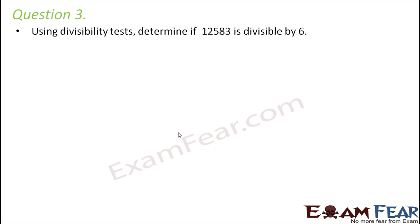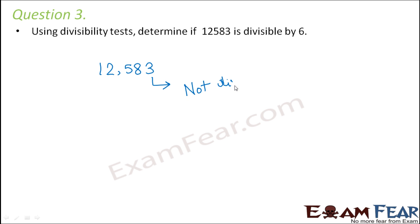Question number 3: Using divisibility tests, determine if 12583 is divisible by 6 or not. The rule says that if a number is divisible by both 2 and 3, then the number is divisible by 6. Let us check divisibility by 2. In order to be divisible by 2, the unit's place digit has to be 0, 2, 4, 6, or 8, which is not true in this case. Therefore, this number is not divisible by 2. Since it is not divisible by 2, there is no point checking divisibility by 3, so we can directly say the number will not be divisible by 6.